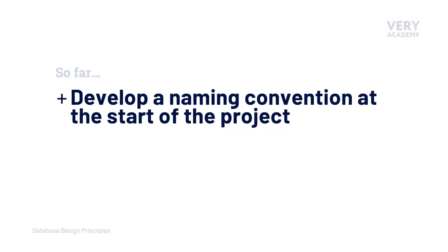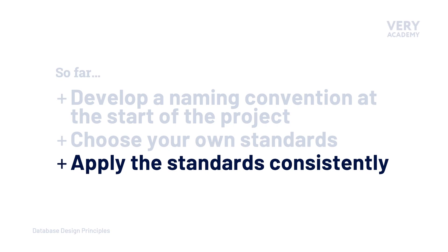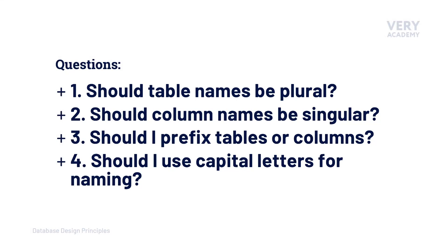The message is that we should try to develop a naming convention, if possible and if appropriate, at the start of the project so that everyone will follow that convention as we start to develop the application or database. The reality is that you can choose whatever standard or work in any way that you like, though you will have some limitations set by the software you're using. Databases will have some limitations on the types of characters or lengths of values that can be used in names. Above all, we apply our naming standards consistently throughout the project. There are some common questions you'll typically ask yourself when building your own naming convention.